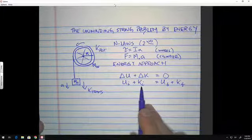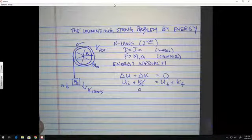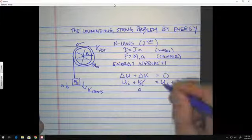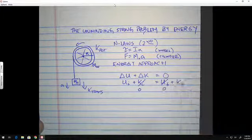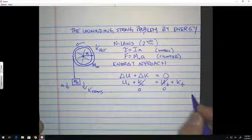Initially, nothing is moving. So this, of course, is zero. And all of the energy will be potential. And finally, the potential will be zero, because that's going to be the mass that's falling.